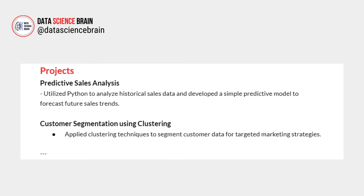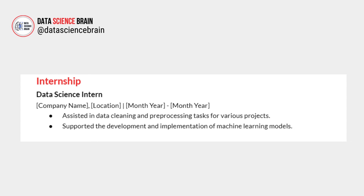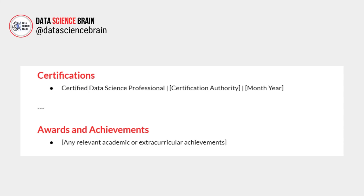Then comes projects — mention your project name, provide a description, and give a point-by-point explanation of what you did and which skills you used. Then comes internships — mention the company name, location, and dates, and describe in bullet points what you did for the company and what skills you gained from the experience.